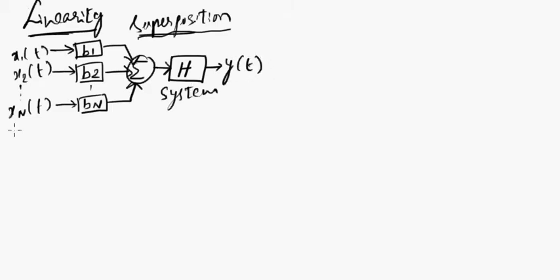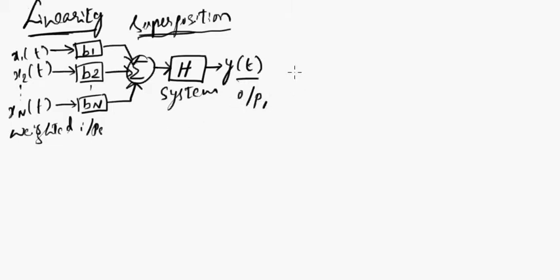After passing through the system H, we are going to get an output signal y(t). These are weighted inputs, this is the system, and this is the output. For the time being, call this as Output 1.